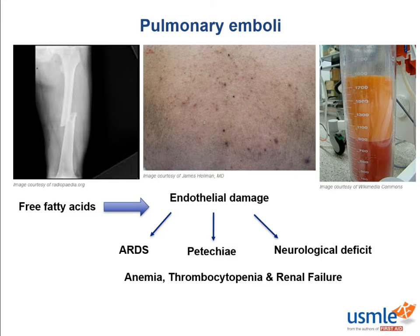You might ask: if these emboli originate in the venous system, how do they make their way to the systemic circulation and cause neurological abnormalities or renal failure? Well, approximately 20–30% of the population have a patent foramen ovale, or PFO, which allows these emboli to go from the right atrium to the left atrium and ultimately the systemic circulation.